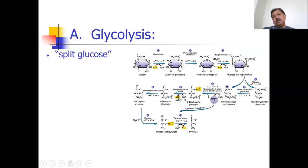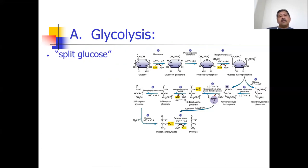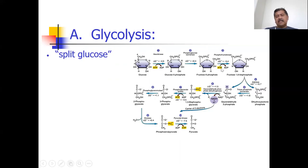Everything from the split point on happens twice. You can see that ATP is used — not just one, but two ATPs used. And over here ATP is generated — two ATPs are generated in one step, and two more in another, but you lose two earlier, so that gives you a net gain of two ATPs.